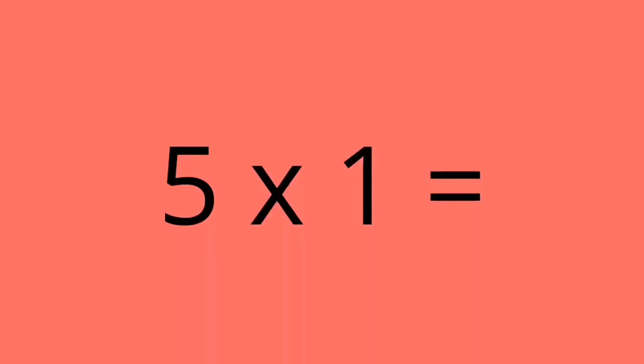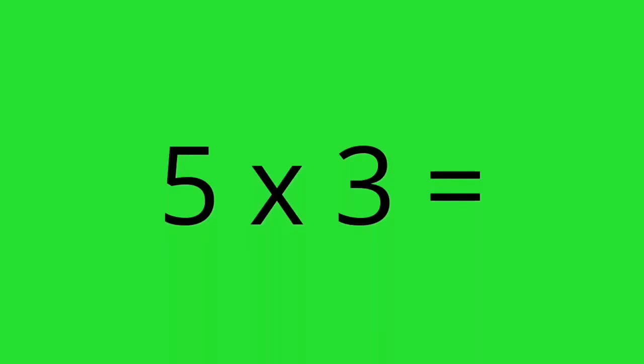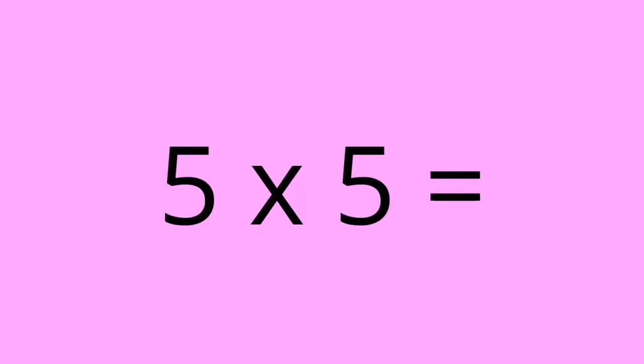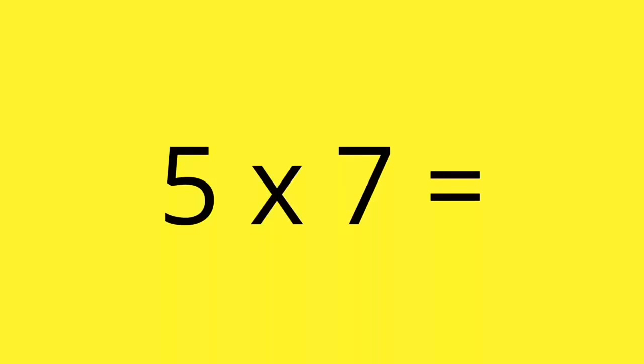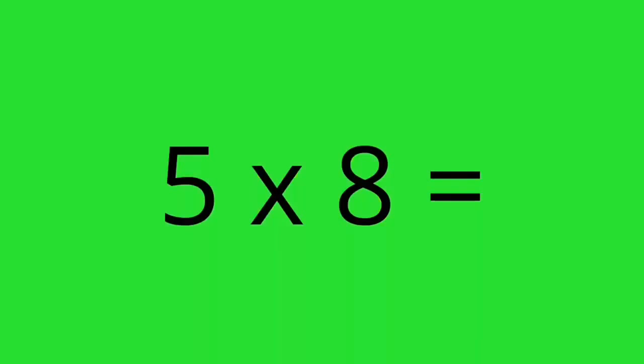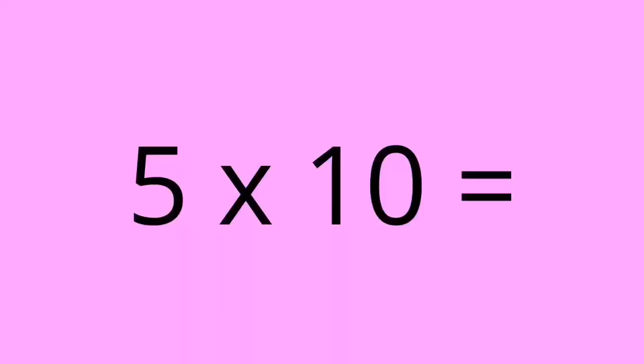5 times 1 equals 5. 5 times 2 equals 10. 5 times 3 equals 15. 5 times 4 equals 20. 5 times 5 equals 25. 5 times 6 equals 30. 5 times 7 equals 35. 5 times 8 equals 40. 5 times 9 equals 45. 5 times 10 equals 50.